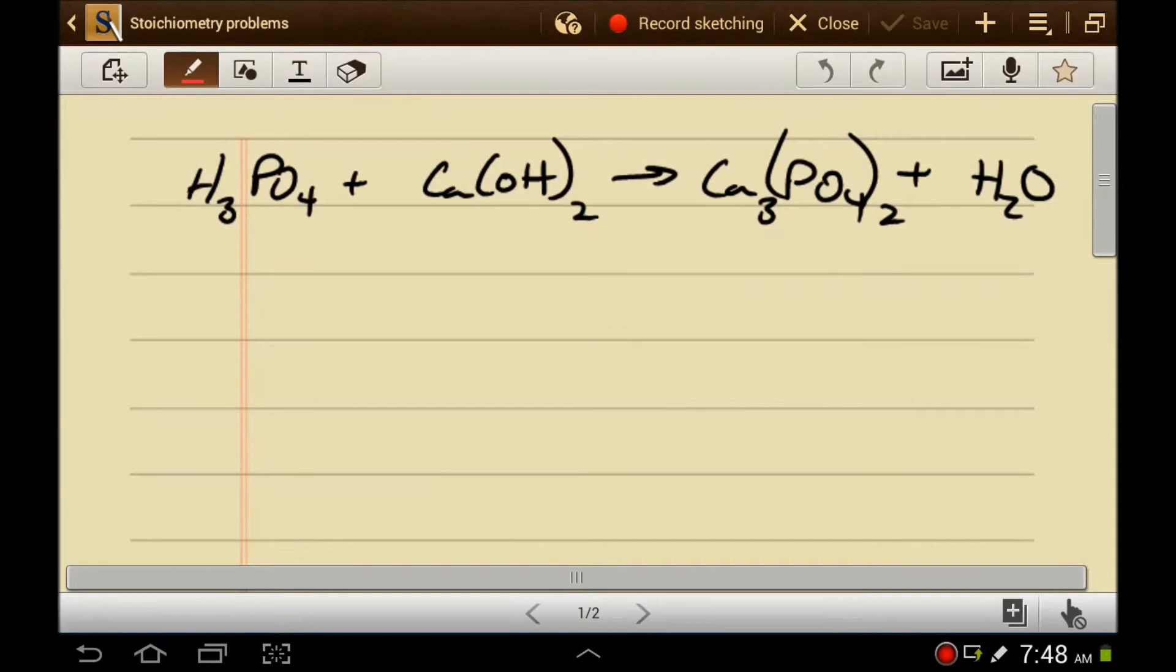A lot of people confuse stoichiometry with dimensional analysis. It's like the way a square is a rectangle, but a rectangle is not a square. Dimensional analysis is simply canceling units. Stoichiometry is specifically the mole-to-mole ratio.